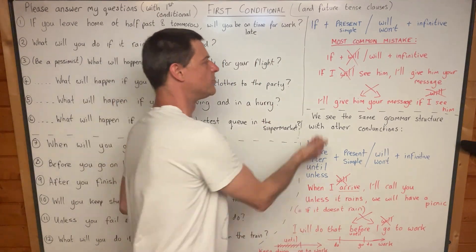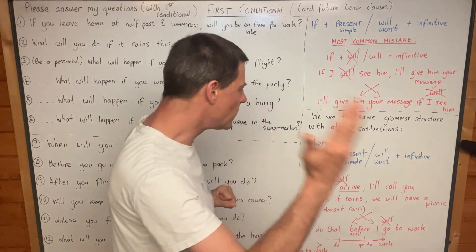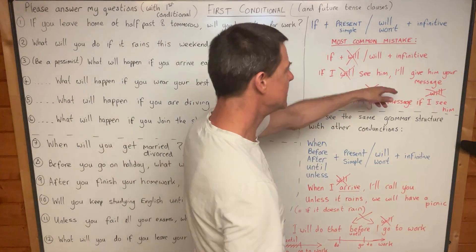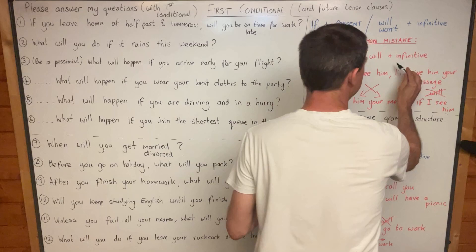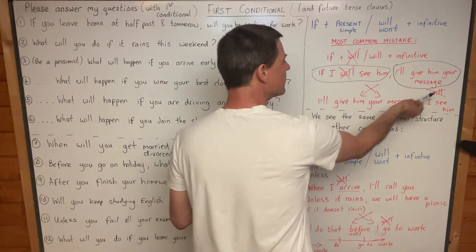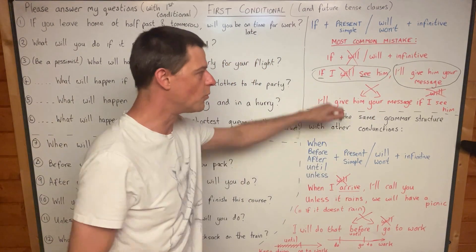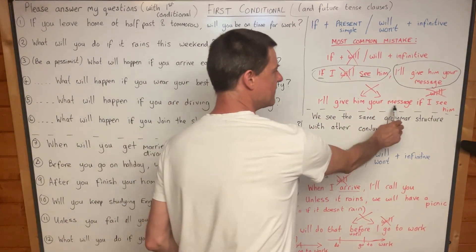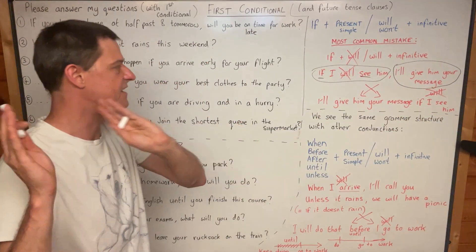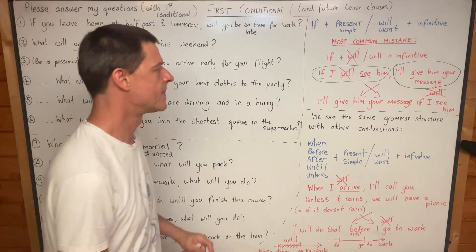Let me give you a few more examples. If I see him, I will give him your message. If it is sunny, we will have a picnic. You can also use the will clause first: I will give him your message if I see him — you can swap them around. And still, it's 'if I see,' not 'will see.' Never use will after if. It's wrong in English. It might be correct in your language, but in English, it's wrong.